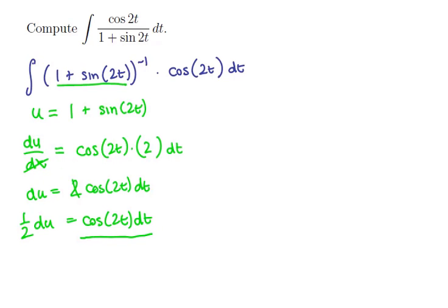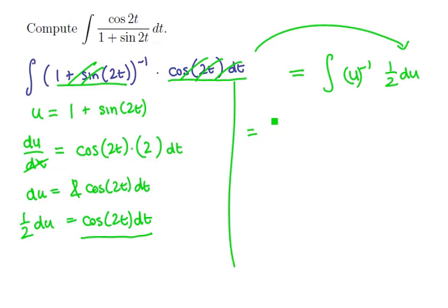So does it match? Well right up here we have that part, so we can replace cosine 2t dt with 1 half du. We can replace the first bit here with just u to the minus 1, and this becomes our new integral. If we clean this up, we're going to have the integral of 1 half u to the minus 1 du.